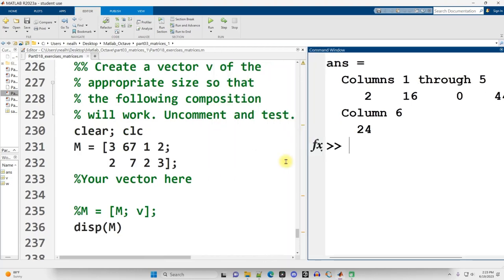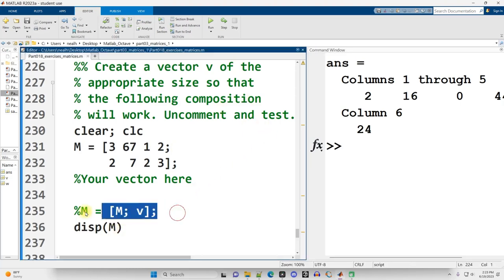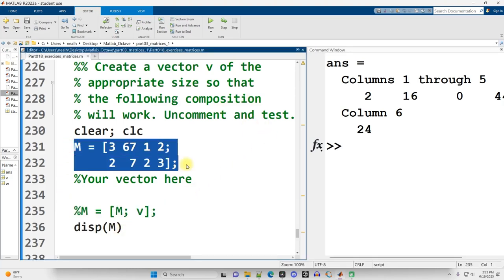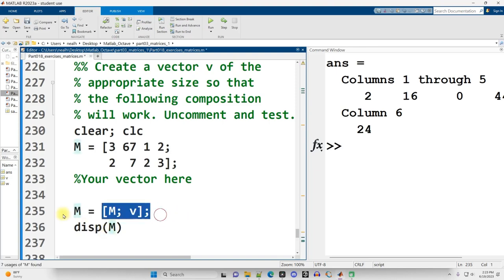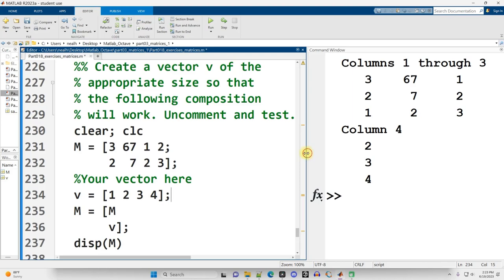Create a vector V of the appropriate size so that the following composition will work. Uncomment and test. All right. So we're just trying to put together M with another vector V right here in this line of code. Semicolon means they're actually going to be stacked vertically. So I would maybe write it like this to emphasize that fact. Now, V is supposed to be a vector, and it can be any values that we choose. We just need to make sure there's four of them because we're stacking it below M, and M has four columns. So I'm just going to make this really easy and just say V equals 1, 2, 3, 4. And that should work out perfectly. And there it is right there.